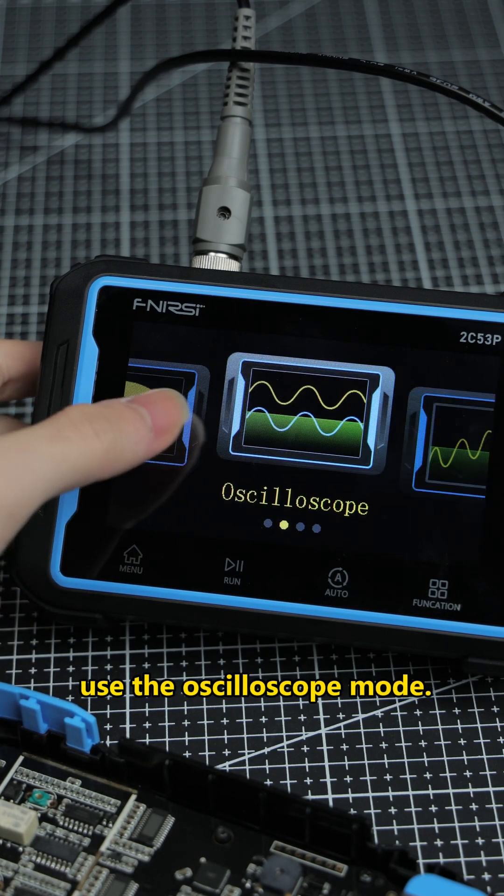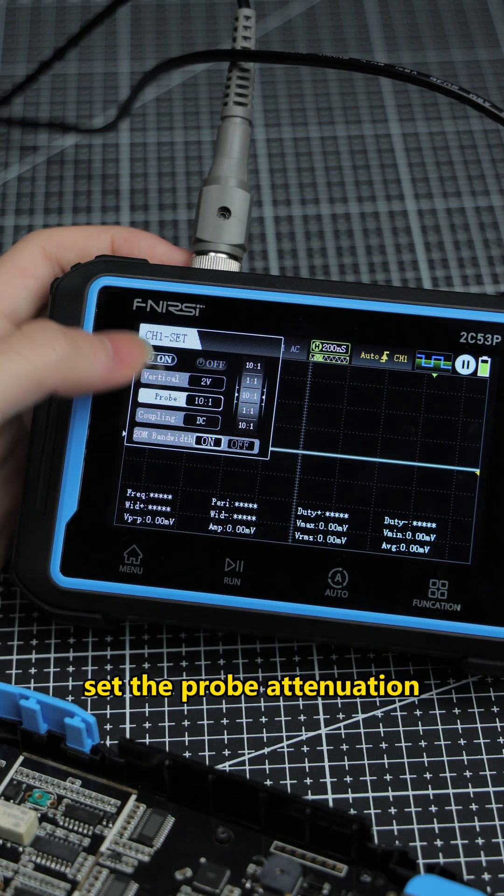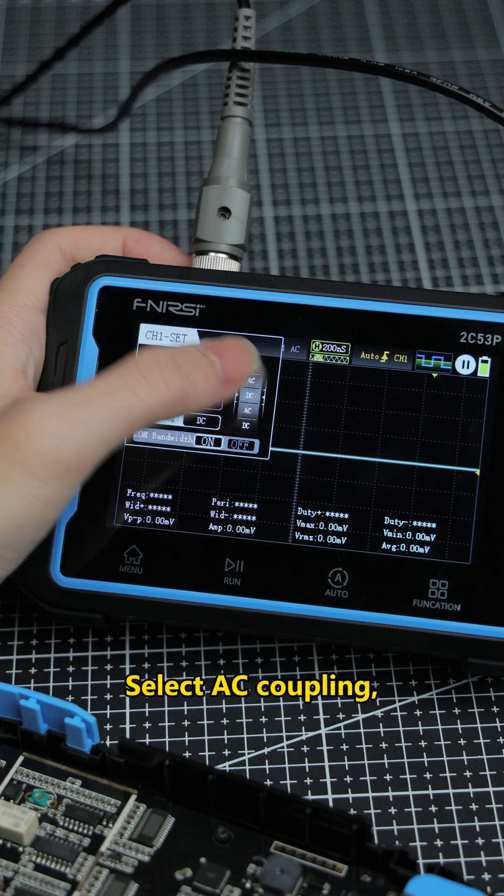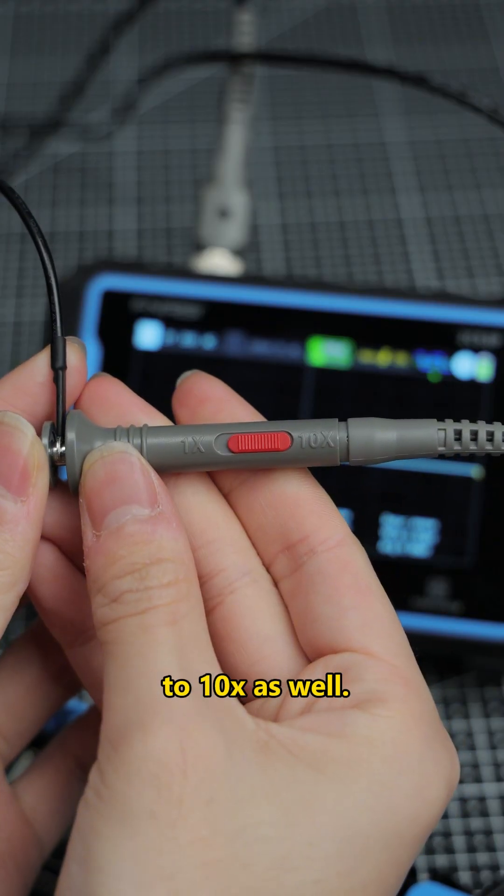For waveforms, use the oscilloscope mode. To measure the crystal, set the probe attenuation to the 10x setting, select AC coupling and set the probe switch to 10x as well.